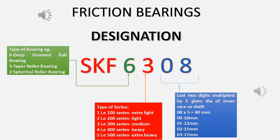Similarly, if the last two digits were 09, multiplying by 5 gives 45 mm. If the last two digits were 04, we multiply by 5 to get the outer diameter of the shaft to be fitted. However, there are certain exceptions: the ones ending with 00 automatically refer to 10 mm, those ending with 01 refer to 12 mm, 02 refers to 15 mm, and 03 refers to 17 mm. In the cases from 00 to 03, we do not need to multiply by 5.